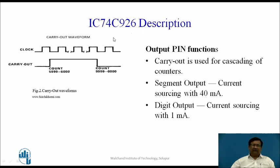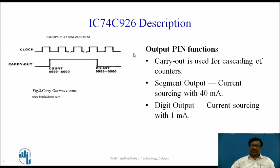Now let us see the carry out operation and how it can be used for cascading the IC74C926. When the count value reaches 9999, the carry out signal goes high and remains high until the counter reaches its final value. Whenever carry out transitions from 1 to 0, we know the counter has reached its final value. This signal can be used to cascade another IC74C926 for counting beyond 9999.